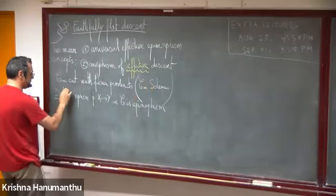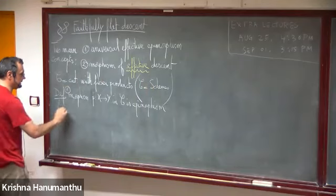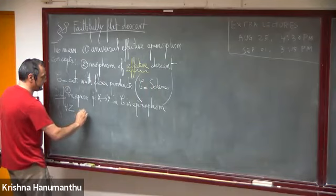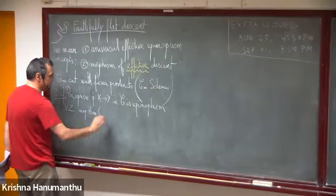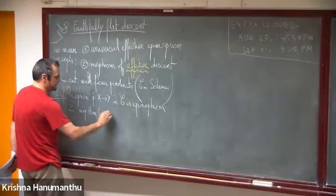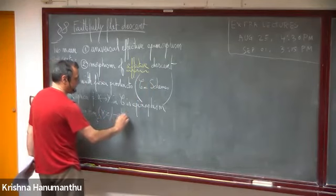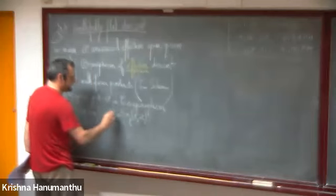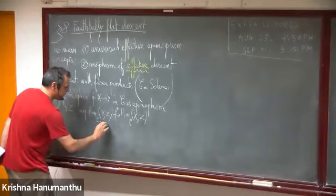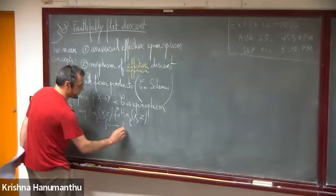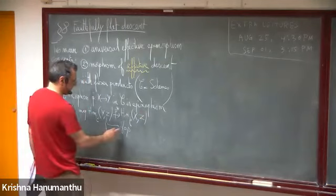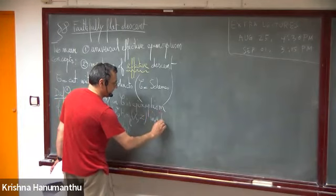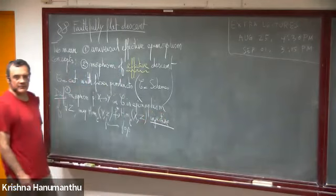This is the first part of the definition of an epimorphism: for any object Z, the map from Hom(Y, Z) to Hom(X, Z), denoted by P-star, which sends any F to the composition with P, is always injective.